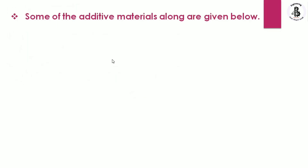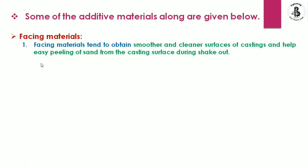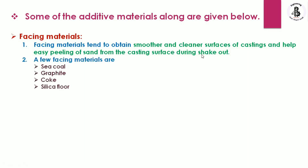One category of additives is facing materials. Facing materials are used to obtain smoother and cleaner surfaces on castings and help in easily peeling off the sand from the casting surface during shakeout. A few facing materials include sea coal, graphite, coke, and silica flour.